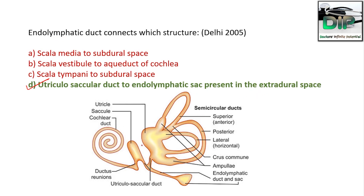The bony labyrinth consists of cochlea, vestibule, and semicircular canal — three semicircular canals: superior or anterior, posterior, and lateral. There is the utricle and saccule. The utriculosaccular duct connects the utricle to the saccule. There is an endolymphatic duct that connects the utriculosaccular duct to the endolymphatic sac, which is present in the extradural space. The ductus reuniens connects the cochlear duct to the saccule.